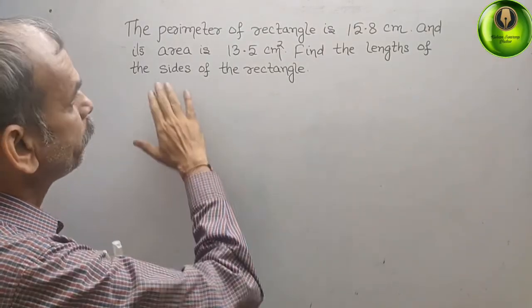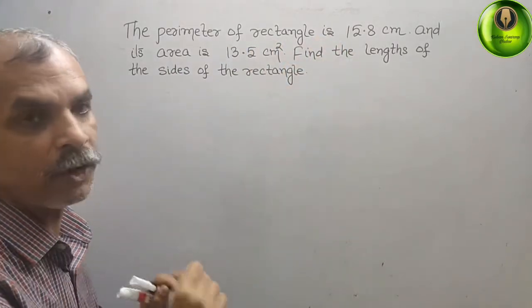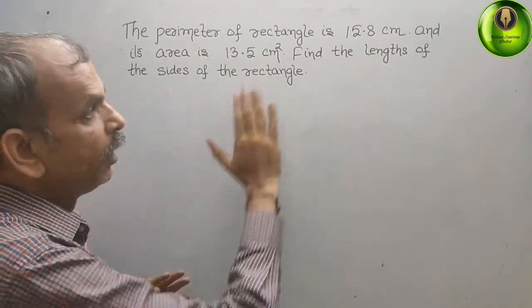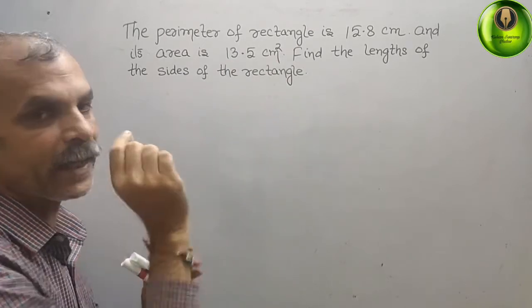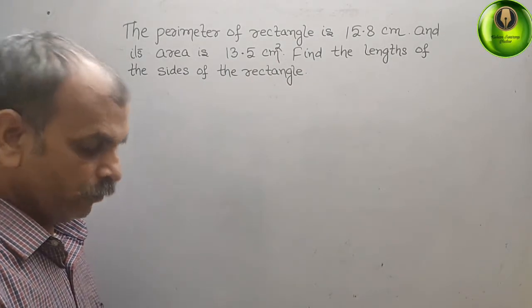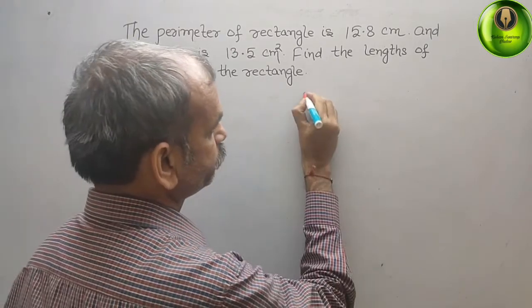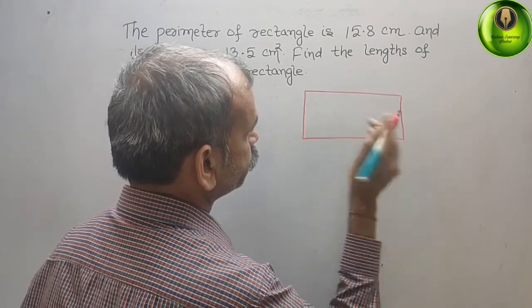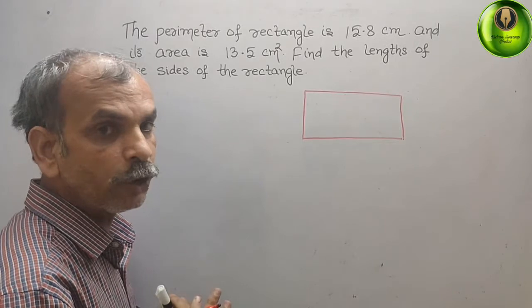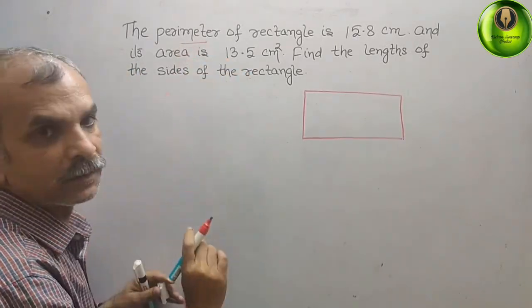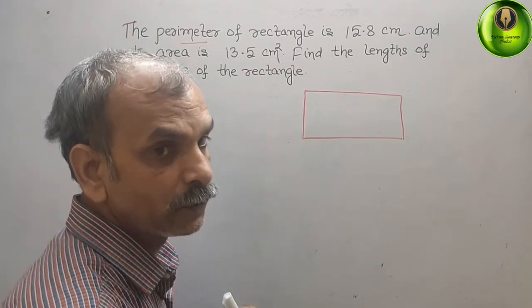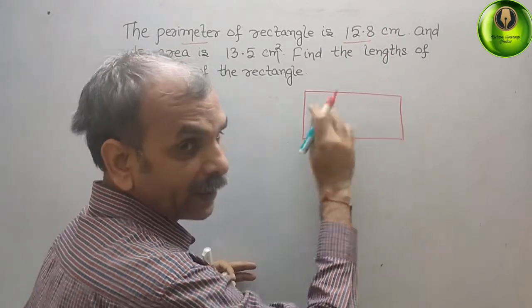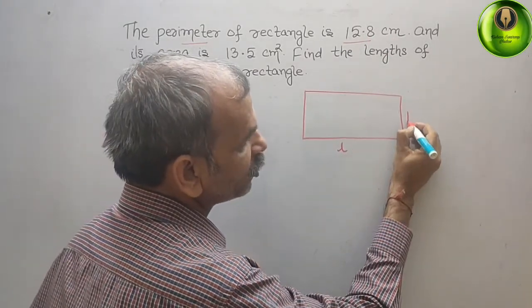Your question is: the perimeter of rectangle is 15.8 cm and its area is 13.5 cm square. Find the length of the sides of the rectangle. So this is your rectangle. In this, what they have told you, the perimeter is 15.8 cm. If this is your rectangle, this is your length and this is your breadth.